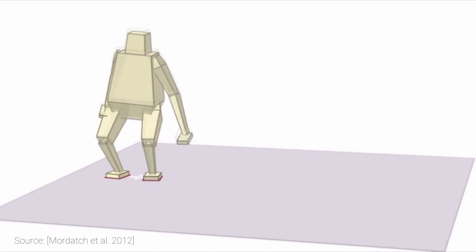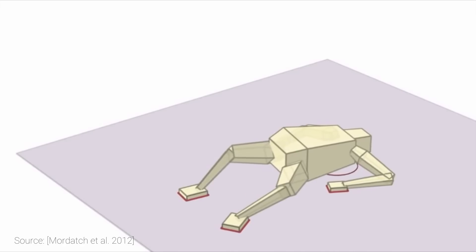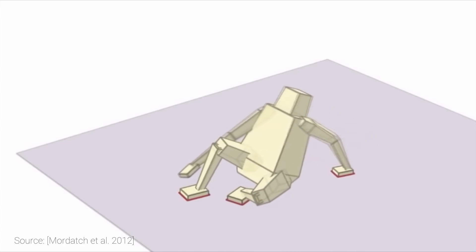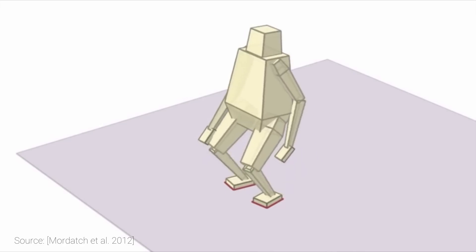We take a digital character, specify an initial pose and a target objective, for instance, a position somewhere in space.